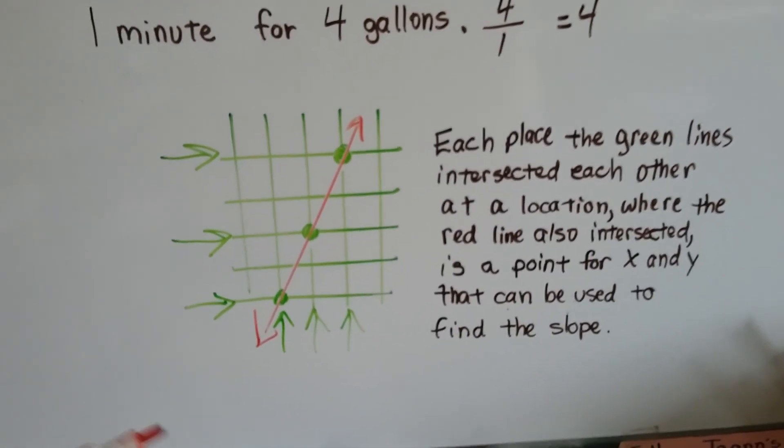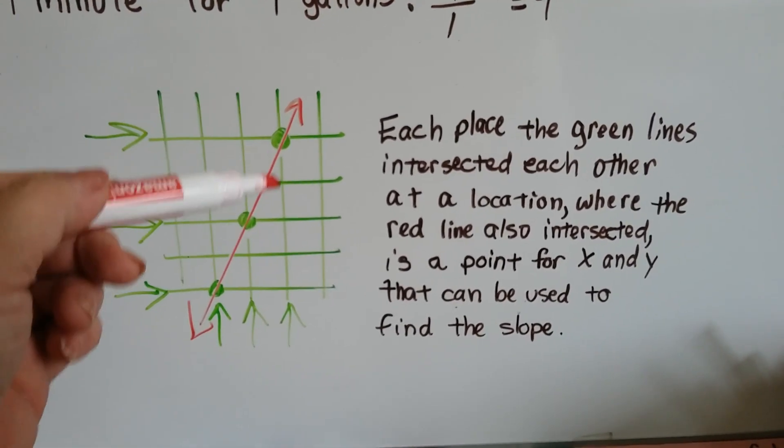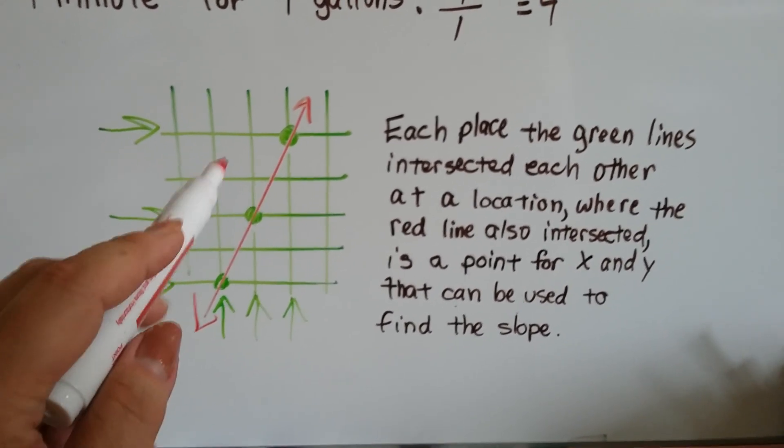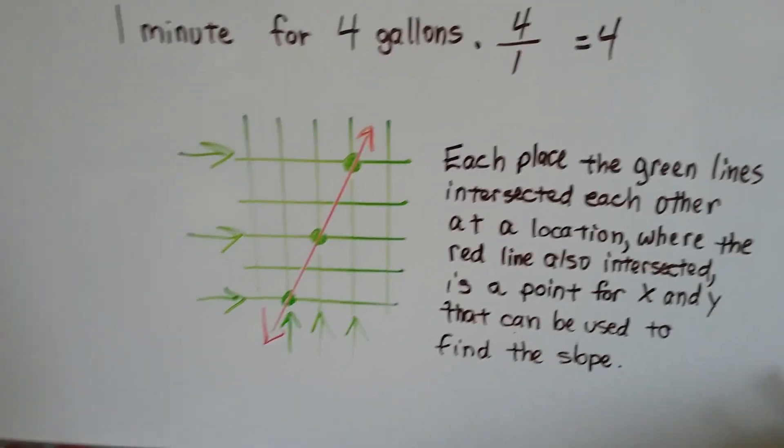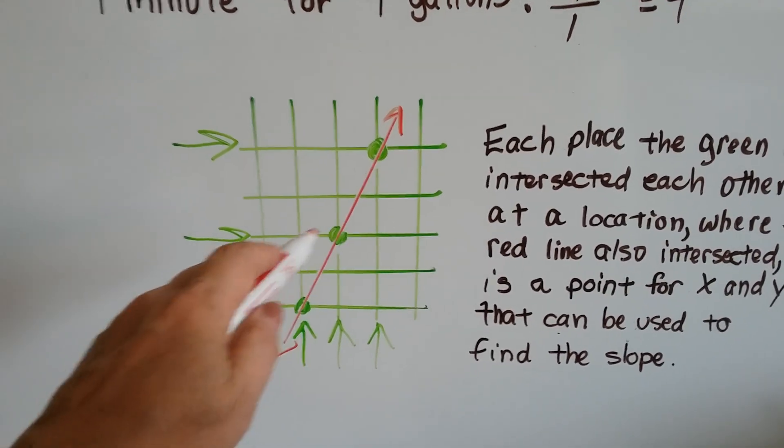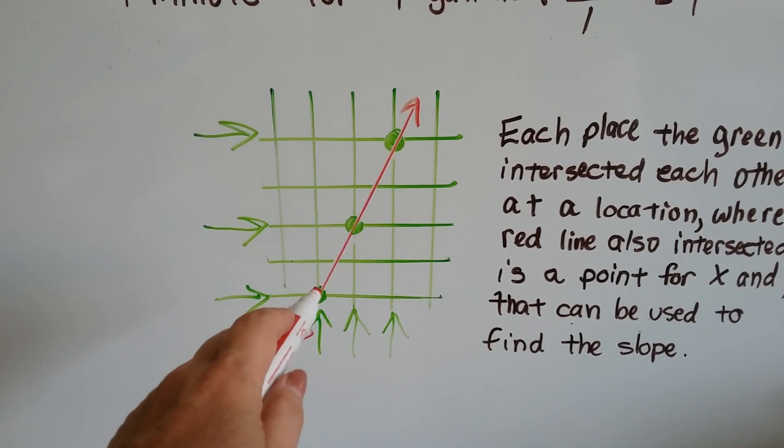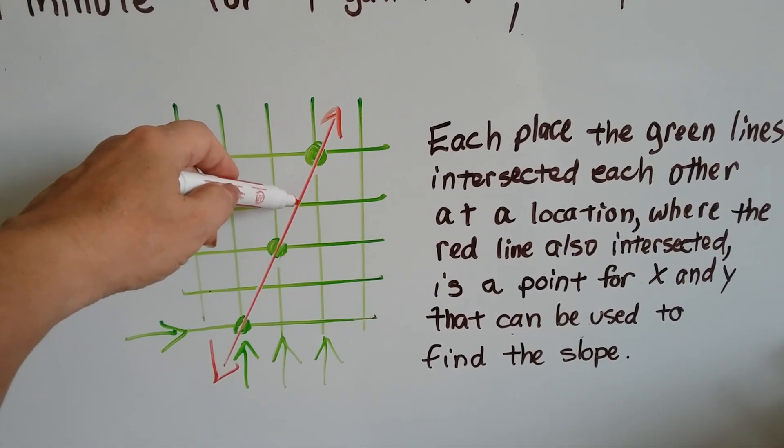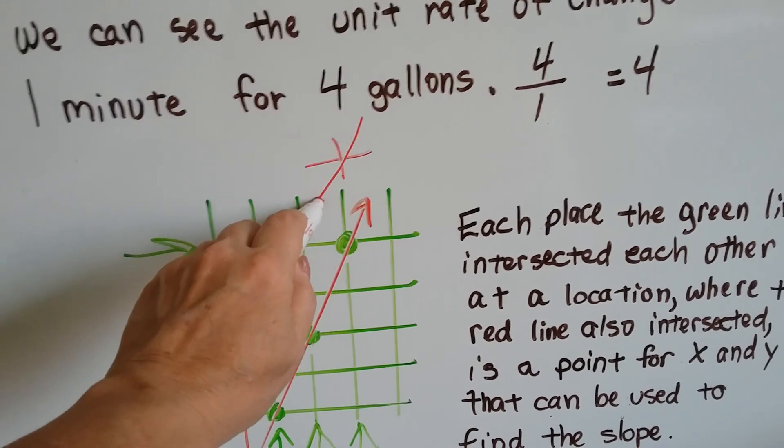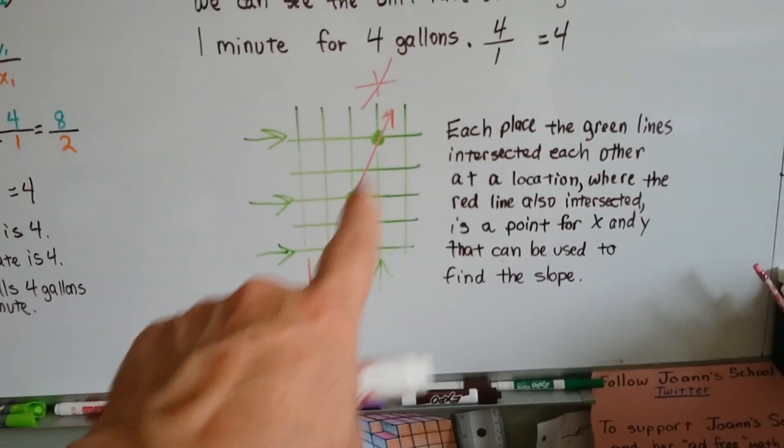And remember, each place that those green lines intersected with each other at a location like here, they're intersecting, where the red line also intersected exactly over that point. That's a point for x and y that can be used to find the slope. The green one's crossed here and the red one crossed there, so we can use that as a point for the slope. The green one's crossed here and the red one crossed it. That's a point for the slope. And they crossed here and the red line crossed there. We can't use here because the two green lines are not crossing here. They're crossing each other here. They're making that plus sign. And then the red line is going through it. That's where we want to use a point to find our slope. And I can see three of them right here.